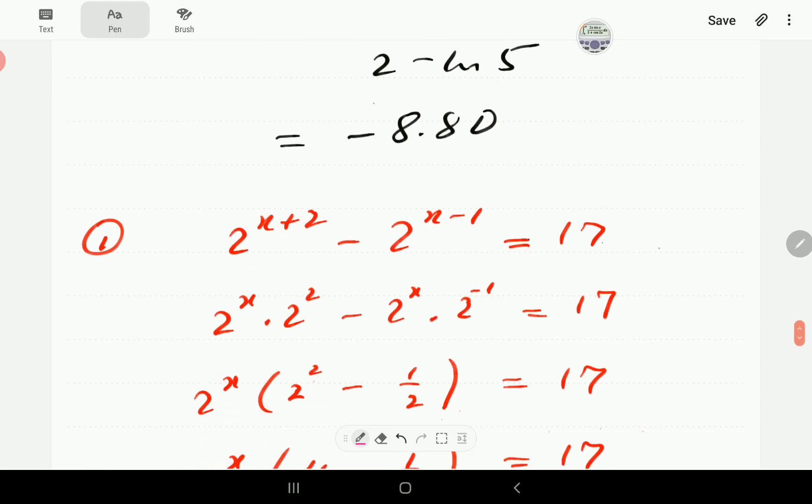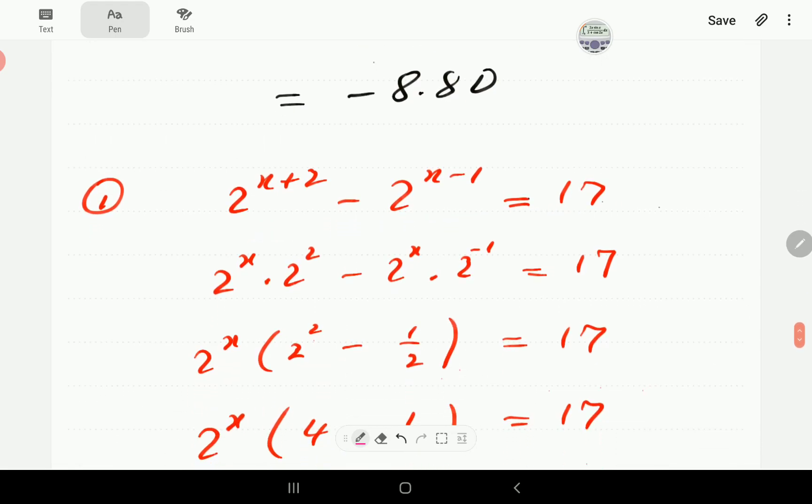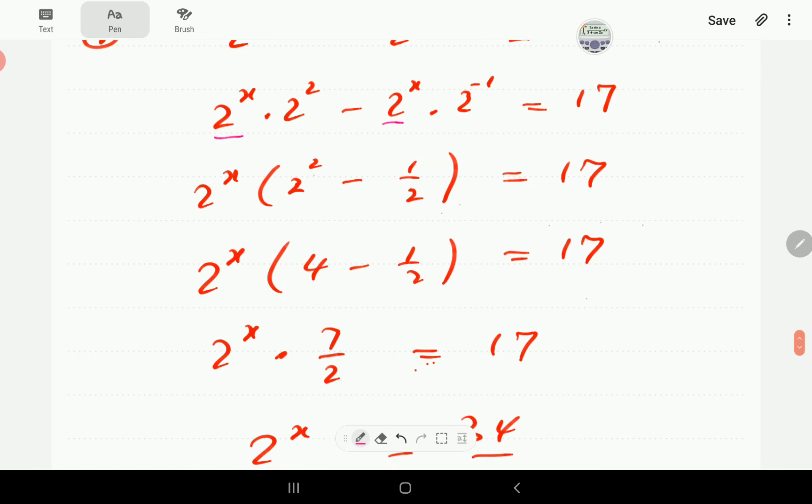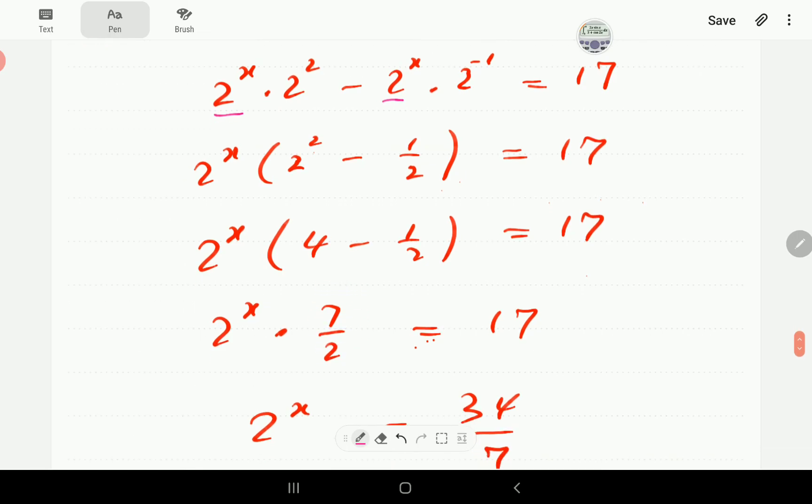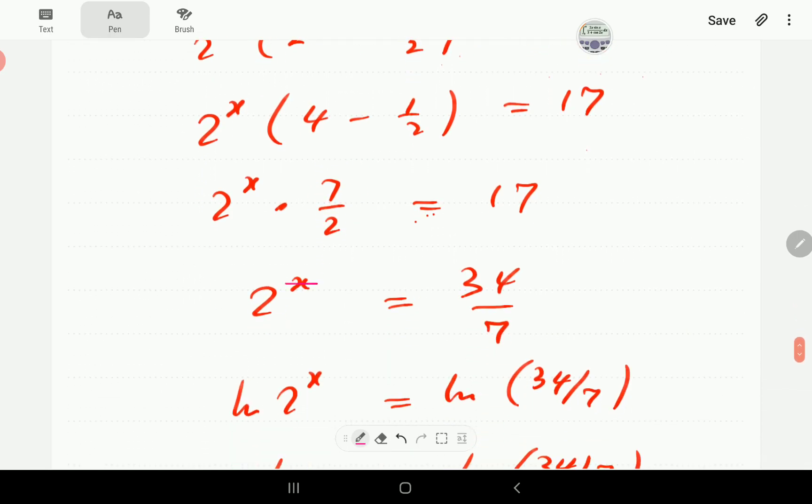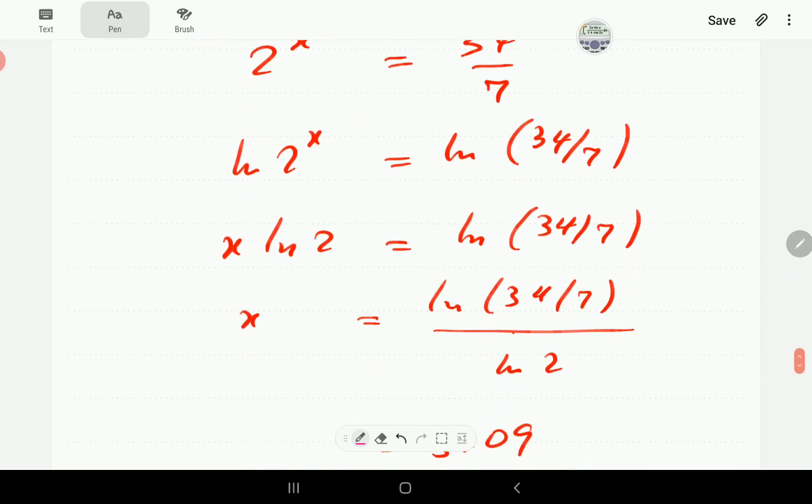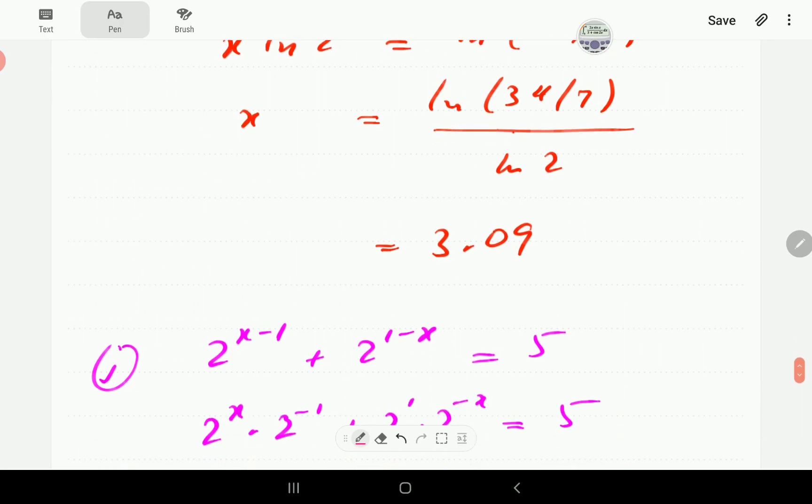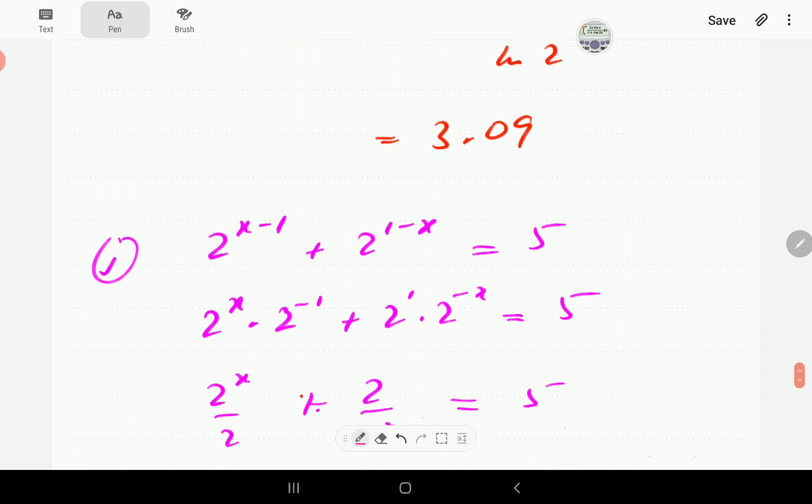This one has got three terms. So we just work with the terms involving x, write them like this. Then we can see that 2^x is common. So we factor that out. And then this simplifies to 7 over 2. And so we can write this as two terms like that. We take ln, we solve it, gives us this.